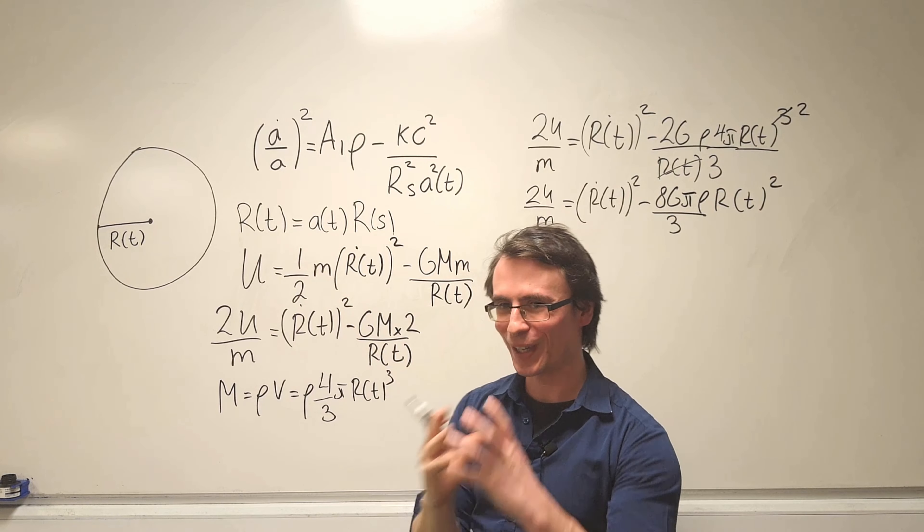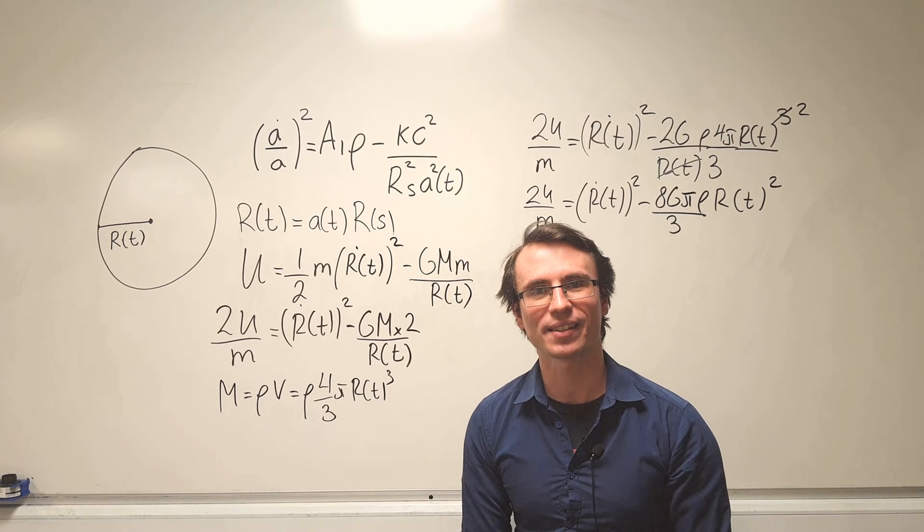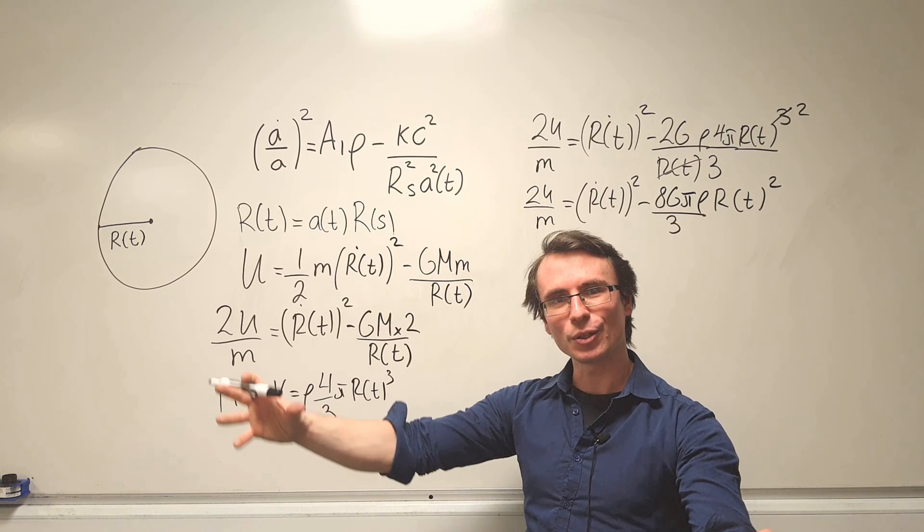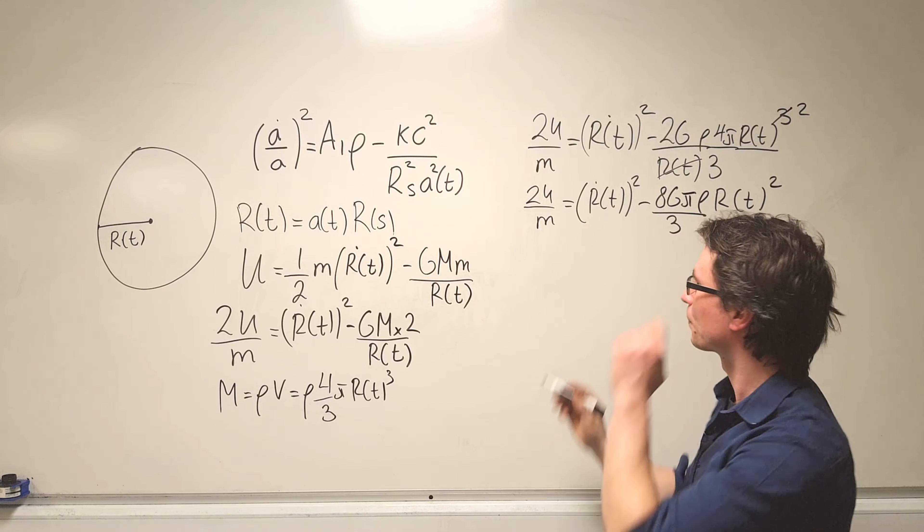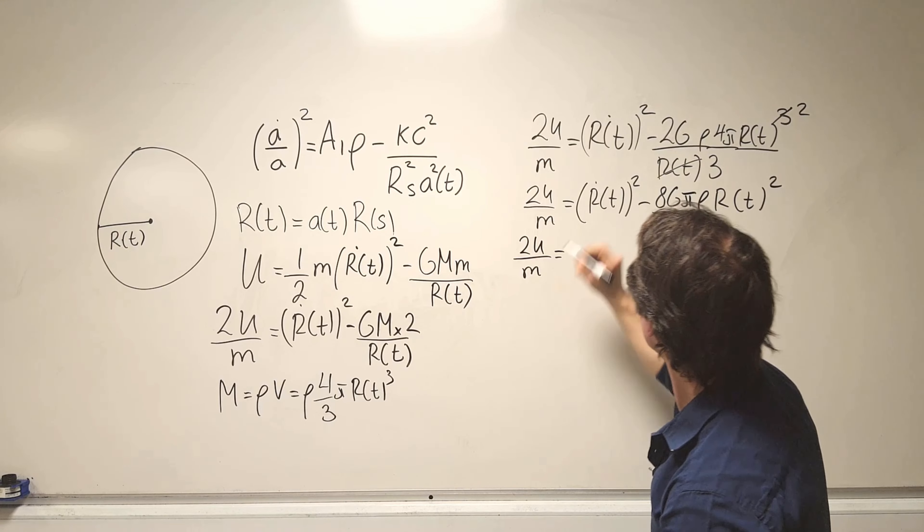Remember though R is a function of both A, the scale factor which tells us how the universe evolves, and R(s) which is just the spatial coordinate. It tells us how the value changes with time. So let's plug this in and put that into here.